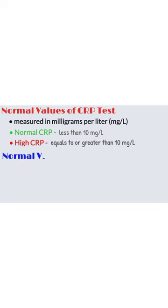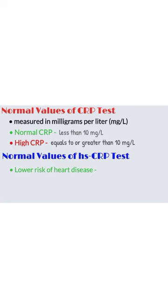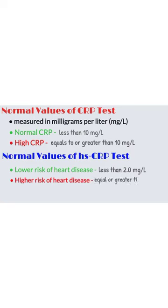Normal values of HSCRP test. You have lower risk of heart disease if your HSCRP level is less than 2 milligrams per liter, and you have a higher risk of heart disease if your HSCRP level is equal to or greater than 2 milligrams per liter.